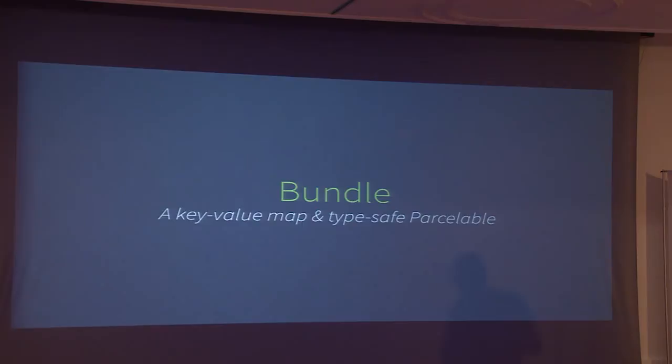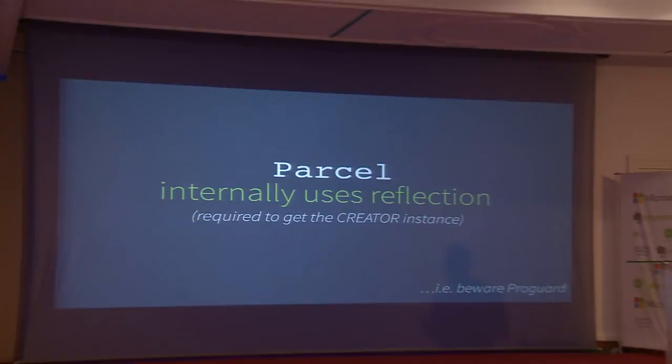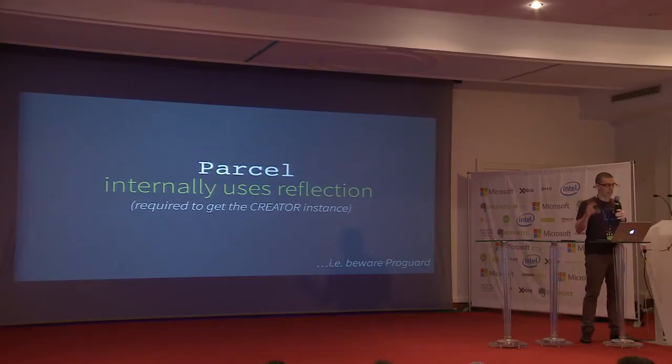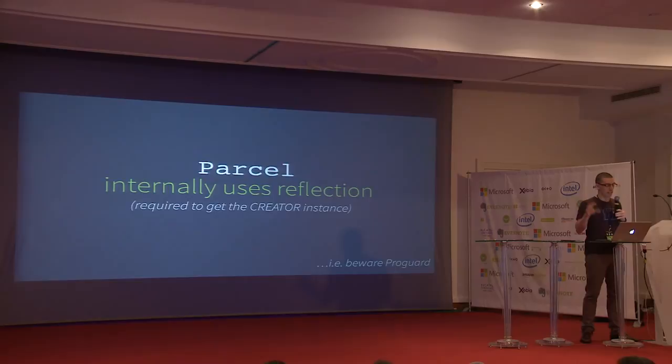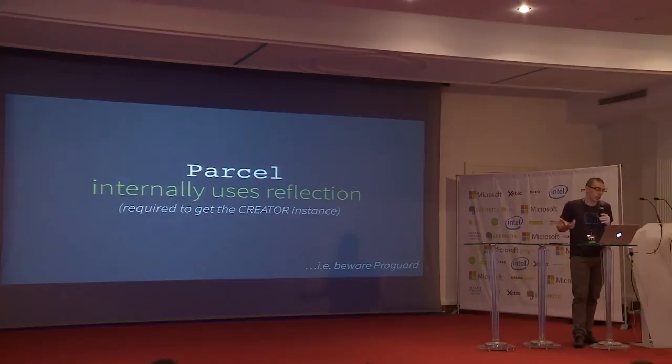There is also Bundle, which is more evolved — a key-value map that is itself a Parcelable object internally, so you can use it if you find raw Parcelable too tedious. One important thing to note: Parcel internally uses reflection to let the system get the instance of the CREATOR. So beware of ProGuard, which strips out what it considers unnecessary code. CREATOR may be removed, so you must have a ProGuard flag to prevent that — this is done by default with the Android SDK configuration, but verify it if you're using a custom setup.